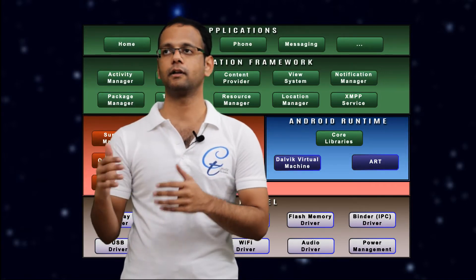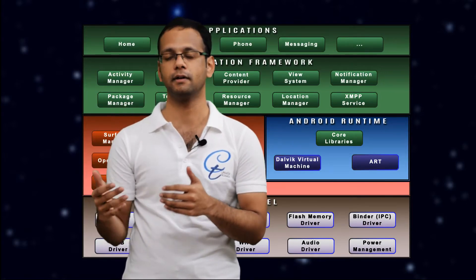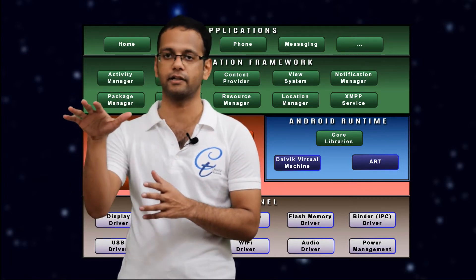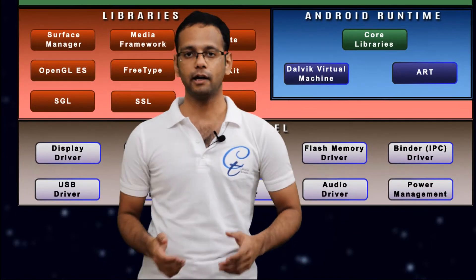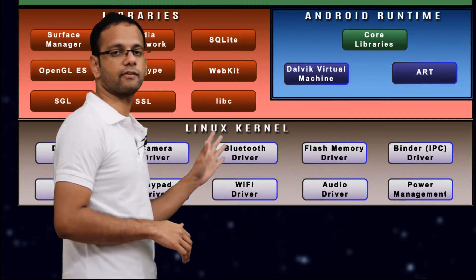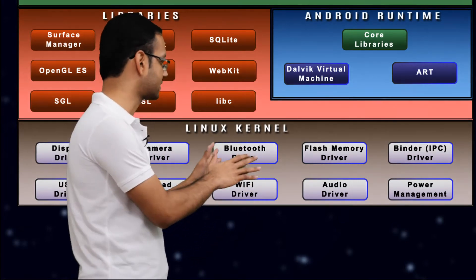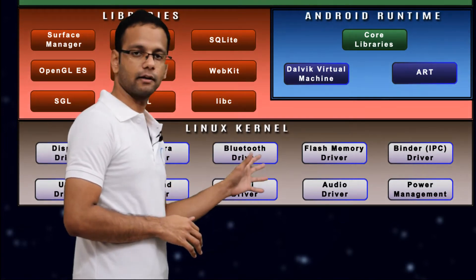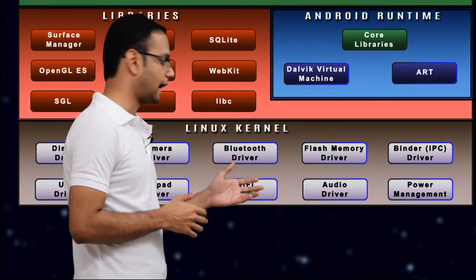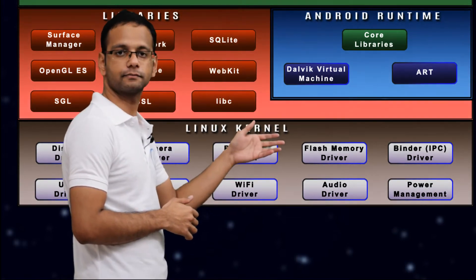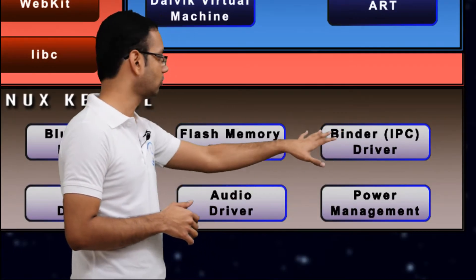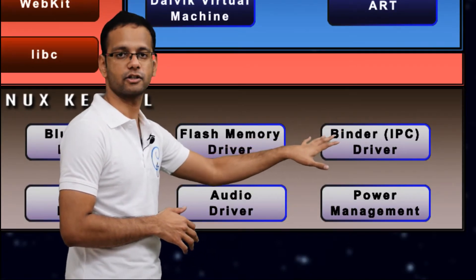The first layer is the Linux kernel, then the libraries and the Android runtime, then the application framework, and at the top we have all the applications. If you get into the Linux kernel, all this gray part is implemented in assembly. It has all the device drivers and low-level operating system components to make the OS work according to higher-level commands. If you look into the binder, the binder's job is to handle all the IPC — the inter-process communication.